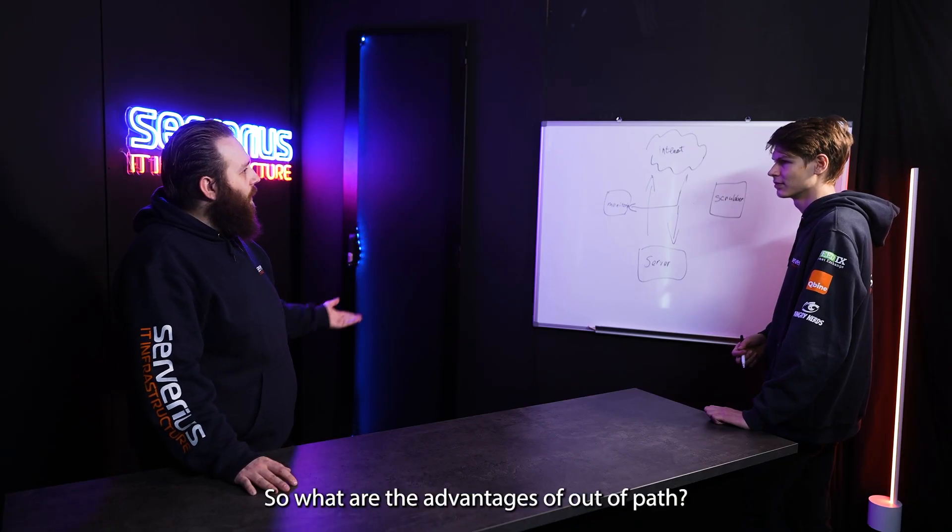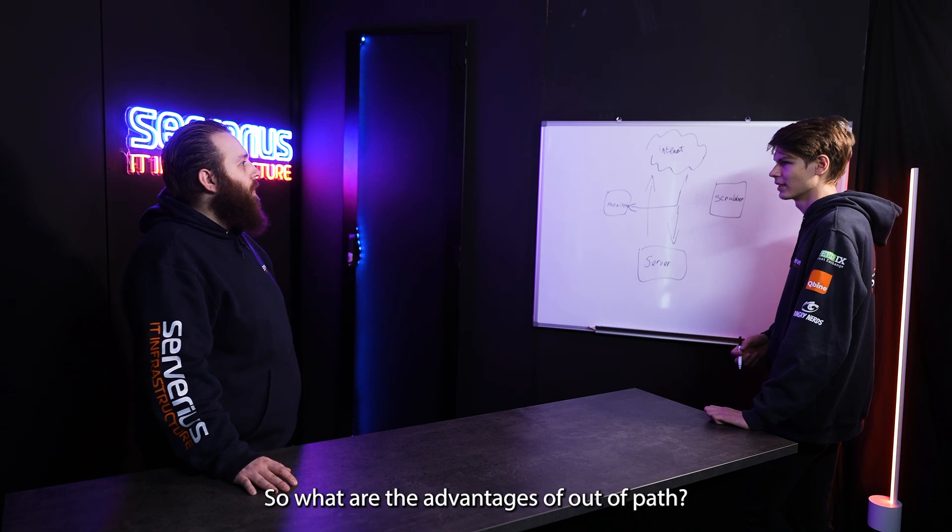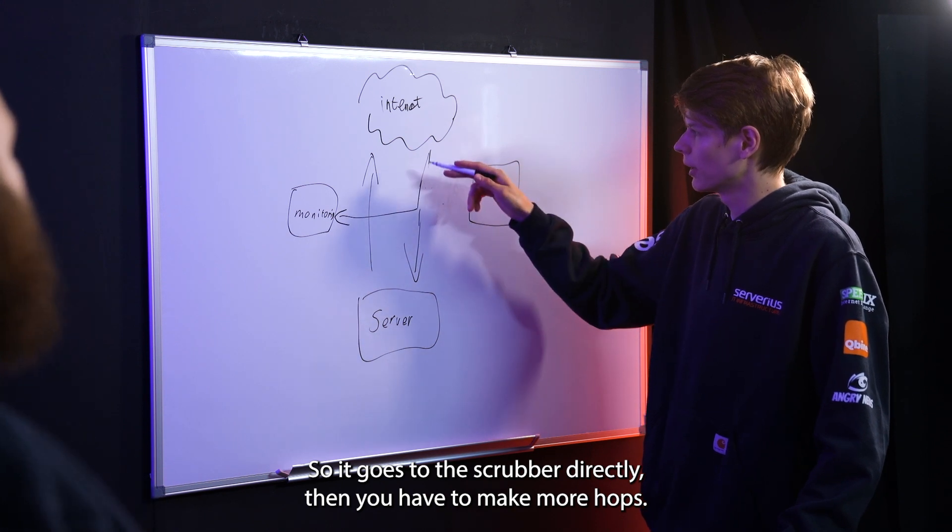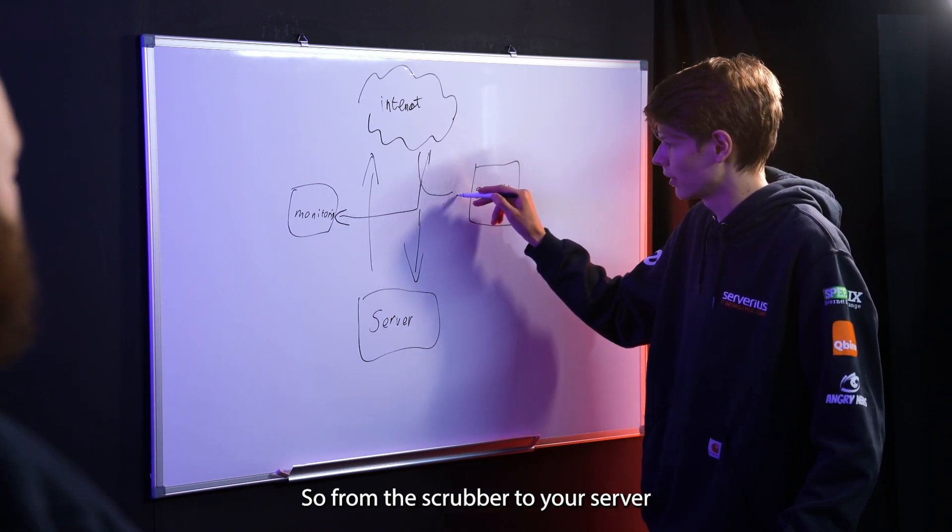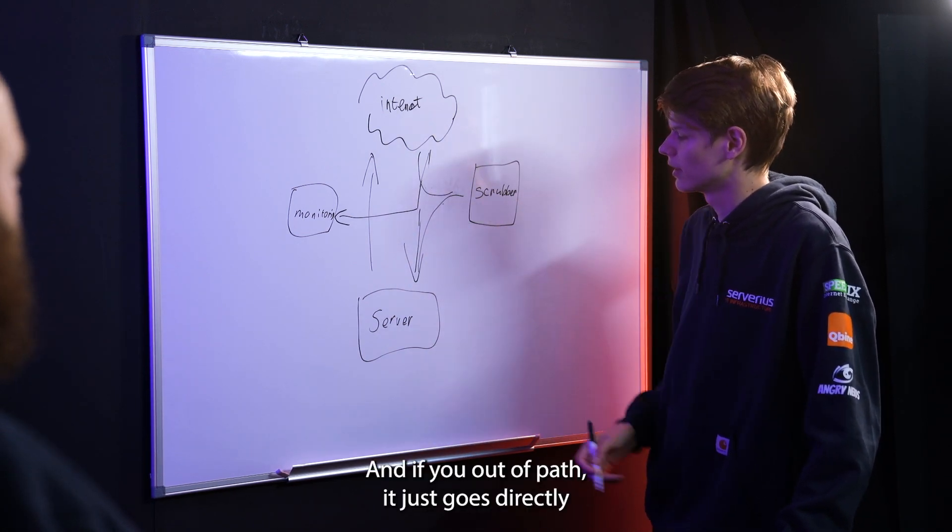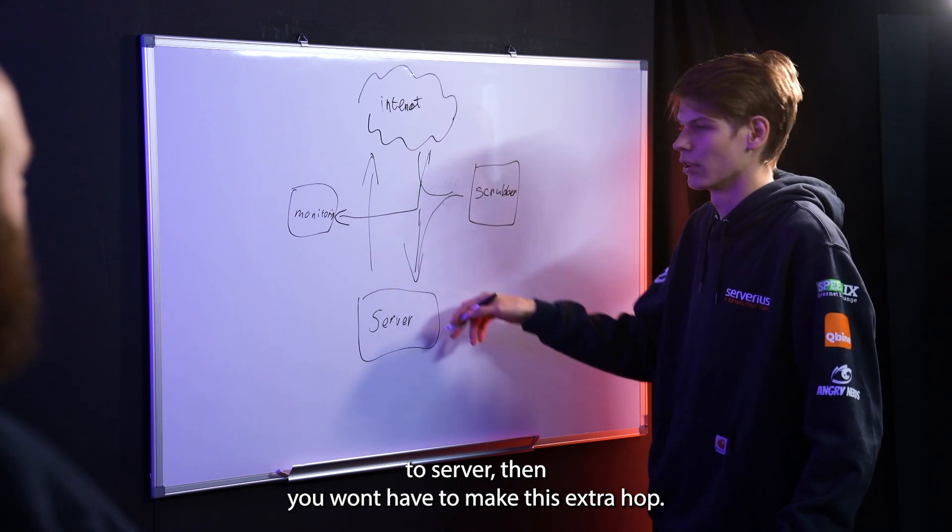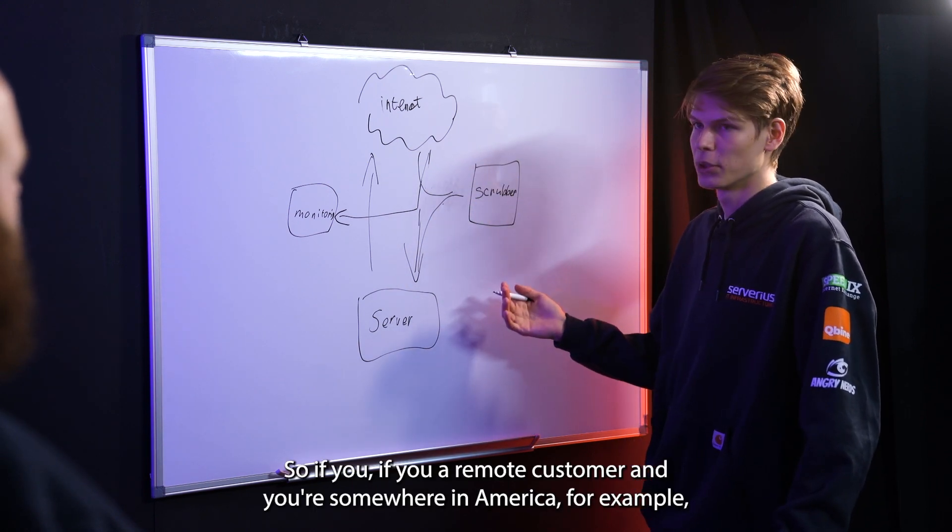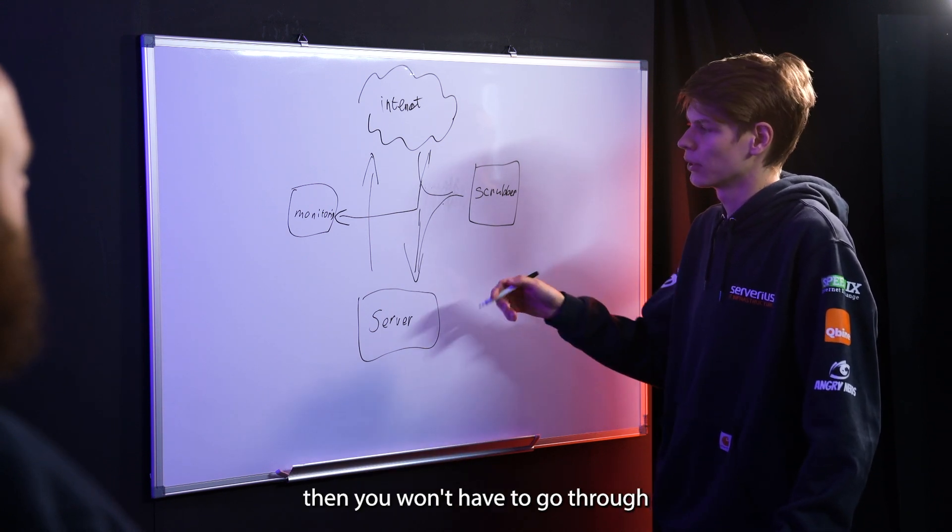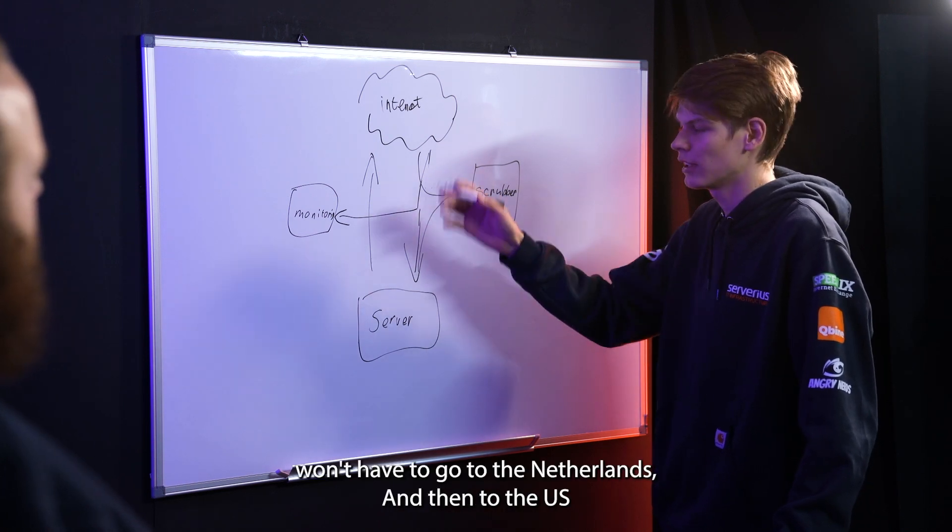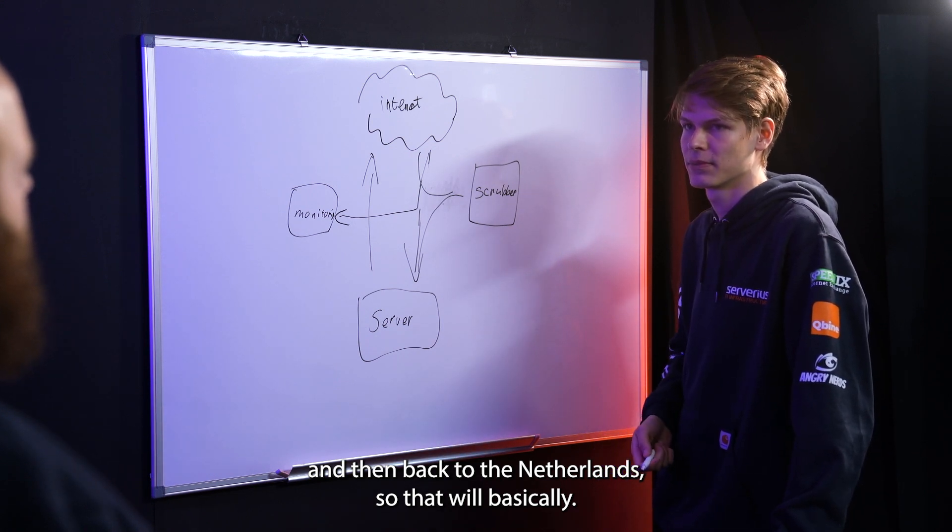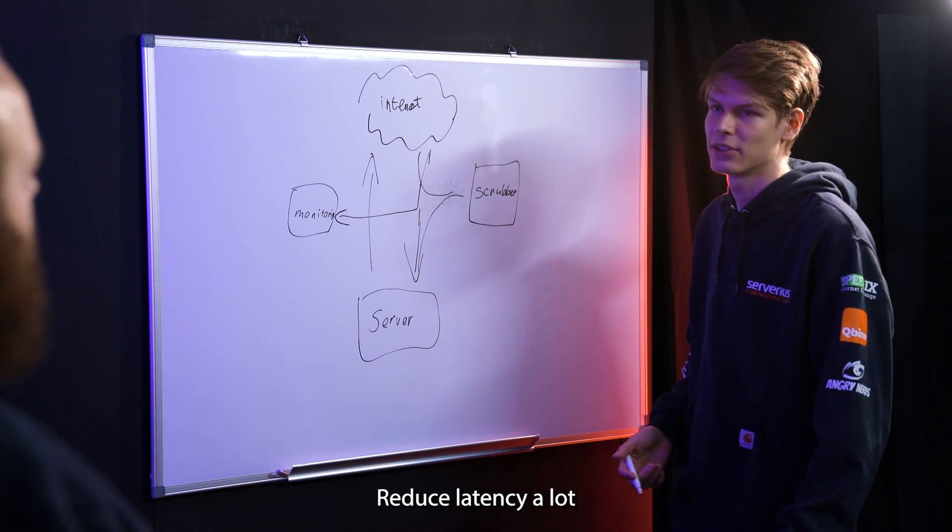So what are the advantages of Out of Path? Well, basically, if you have in-line protection, so it goes to your scrubber directly, then you have to make more hops from the scrubber to your server. And if you have Out of Path, so it just goes directly to your server, then you won't have to make this extra hop. So if you're a remote customer and you're somewhere in America, for example, then your traffic won't have to go to the Netherlands where we are and then back to your server. So that will basically lower your latency a lot.